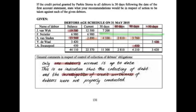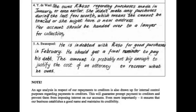Our fourth debtor, Y Deval, is also an interesting case. Y Deval has a balance of $3,420 owed to us for 90 days and longer. She hasn't bought anything in the past three months but this amount remains outstanding. This could mean the debtor is missing — we don't know where to find her, so she's not receiving reminders that she still owes us money. Her account should be handed over to the lawyers for collection.